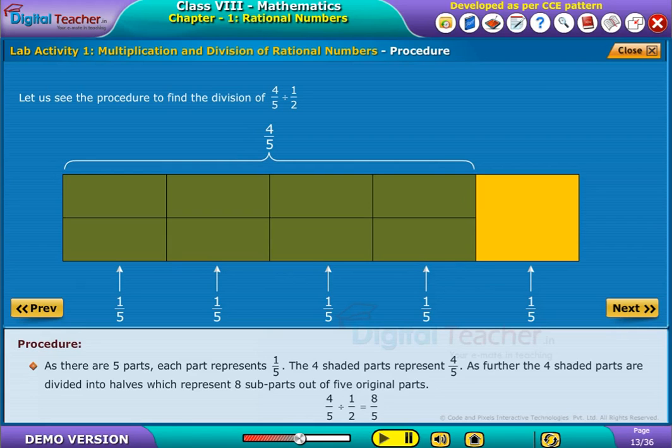That is 4 by 5 divided by 1 by 2, which is equal to 8 by 5.